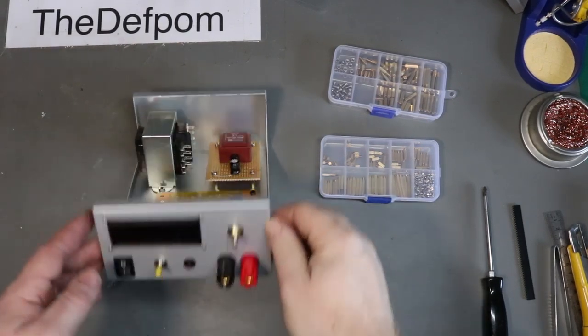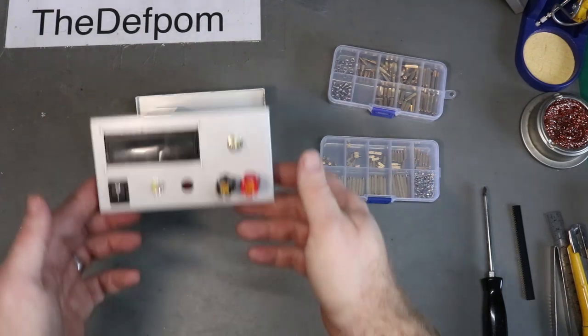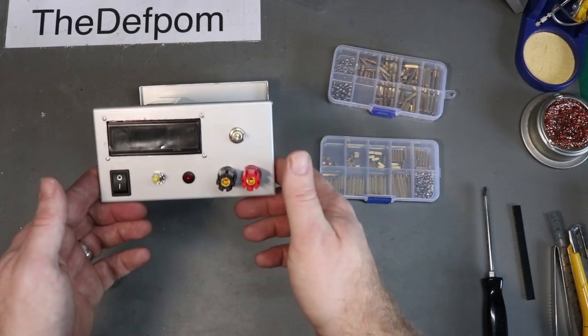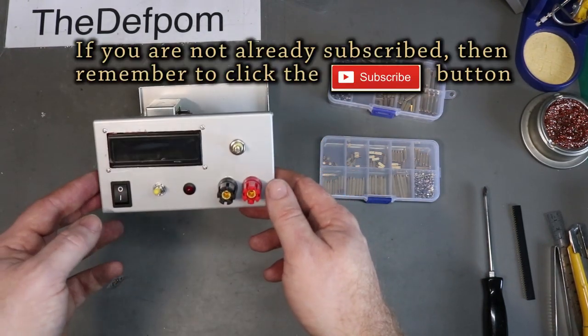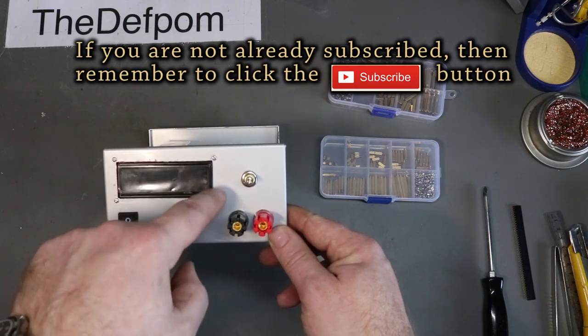All right, so here's the leakage tested project. I've started building a case for it. As you can see, I didn't want to bore you with the whole assembly part. I use a nibbler tool to take these edges out.